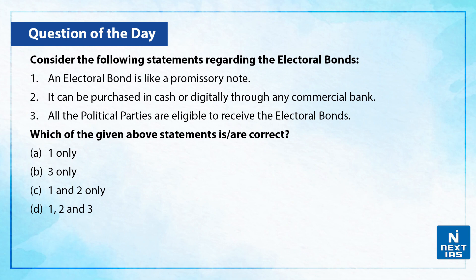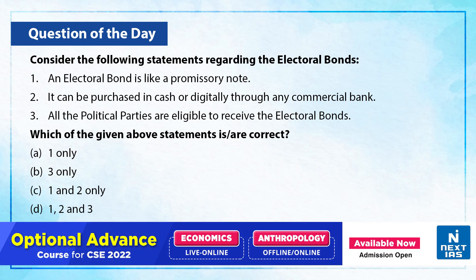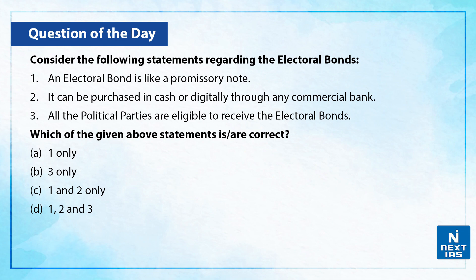Let us take up one practice question on this topic. Consider the following statements regarding the electoral bonds. First, an electoral bond is like a promissory note. Second, it can be purchased in cash or digitally through any commercial bank. Third, all the political parties are eligible to receive the electoral bonds. Which of the given above statements are correct? You can take a moment and write your answers in the comments section below.